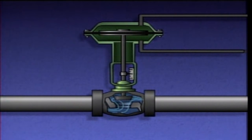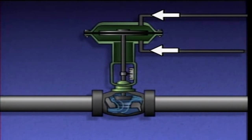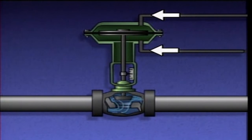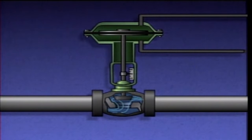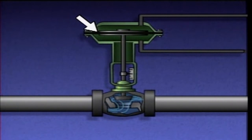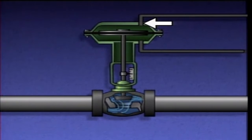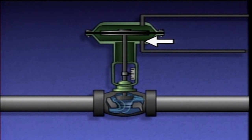A double-acting diaphragm actuator is called double-acting because air pressure acts on both sides of a flexible diaphragm to position a valve. A double-acting diaphragm actuator consists of a casing, a flexible diaphragm, an upper air supply port, and a lower air supply port.